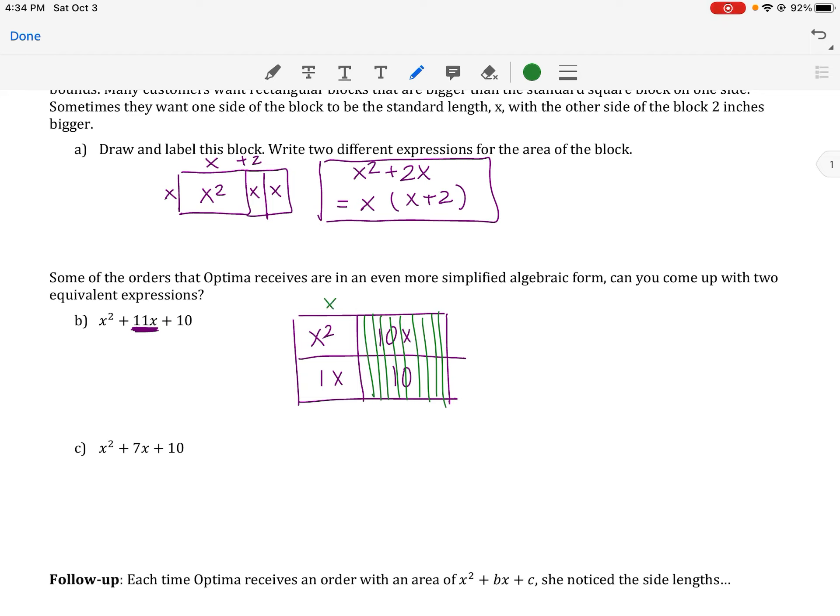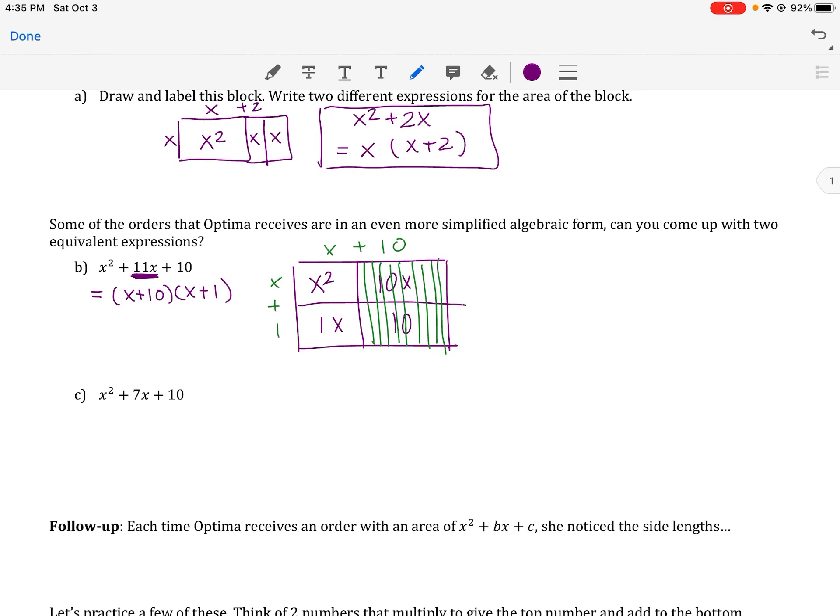If we look at the outside, then, this would be x plus ten and this is x plus one. So our two equivalent expressions here would be that this is equal to x plus ten times x plus one. Notice how we kind of broke up that 11x to two separate parts, the 10x and the 1x.